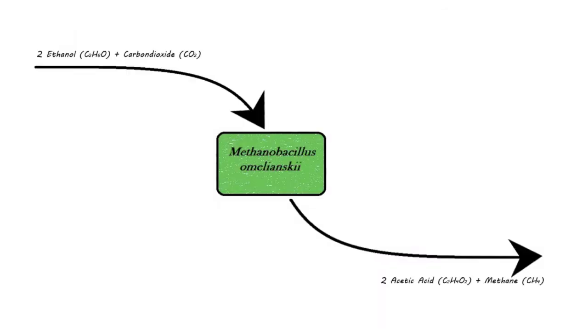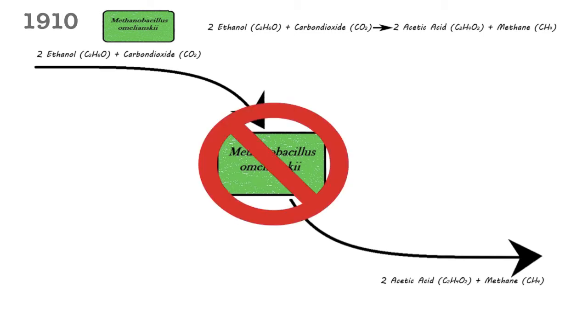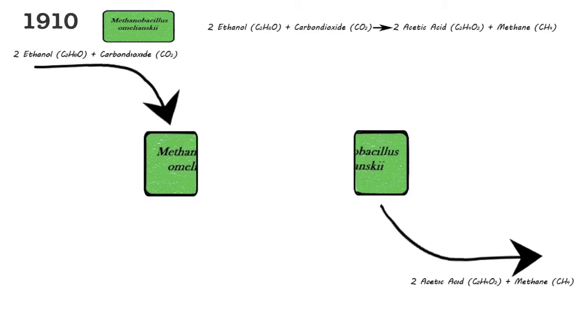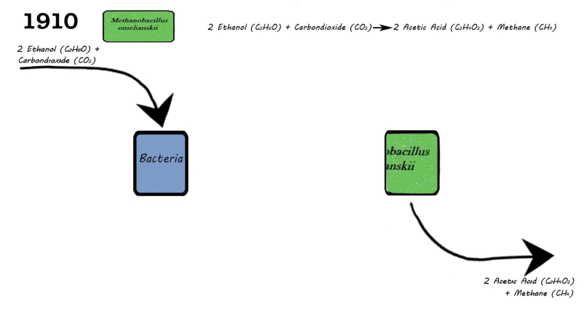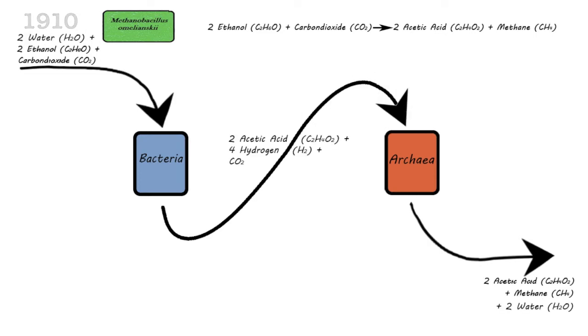With all this knowledge, the original reaction of Vasily Omeliansky doesn't apply anymore. Looking again at the reaction from 1910, in 1967 an intermediate was added between the two microorganisms. The microorganisms were classified into two different domains: the first reaction was performed by bacteria and the second by archaea. The total reaction was adapted with hydrogen, discovered in 1940, as the intermediate. To complete the total reaction, water was added.